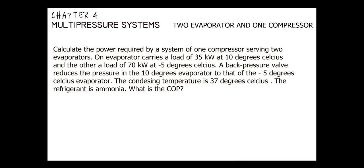We have a sample problem: calculate the power required by a system of one compressor serving two evaporators. Evaporator one carries a load of 35 kilowatts maintaining a temperature of 10 degrees Celsius, and the other carries a load of 70 kilowatts with a maintaining temperature of negative 5 degrees Celsius. A back pressure valve reduces the pressure in the 10-degree evaporator to that of the negative 5-degree evaporator. The condensing temperature is 37 degrees Celsius, and the refrigerant used is ammonia.